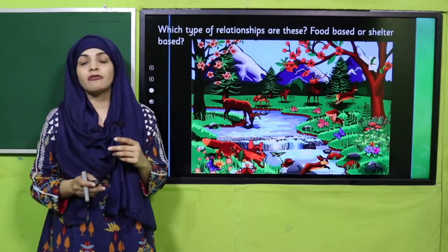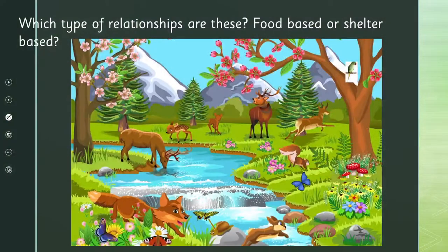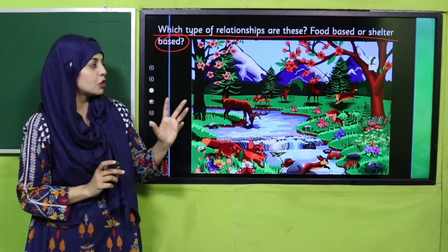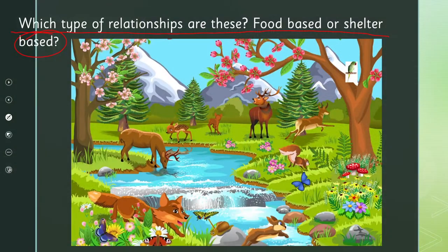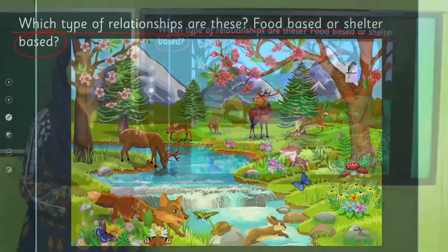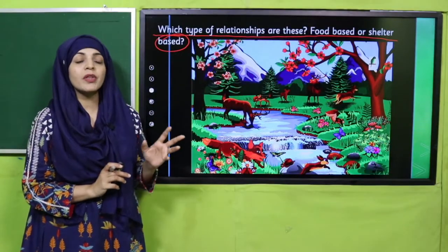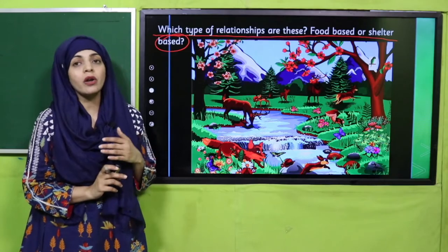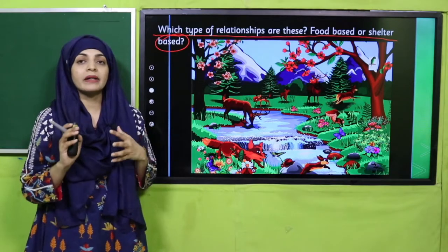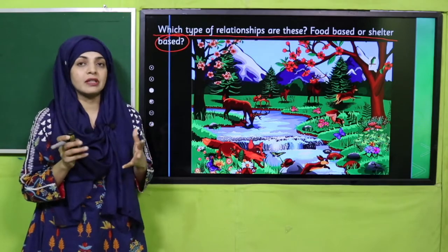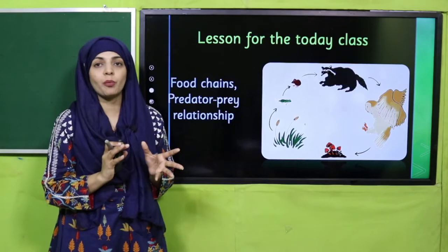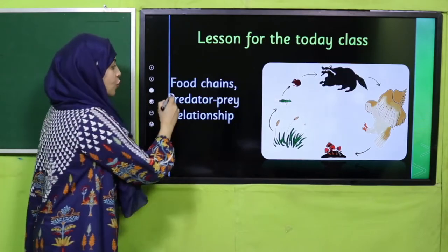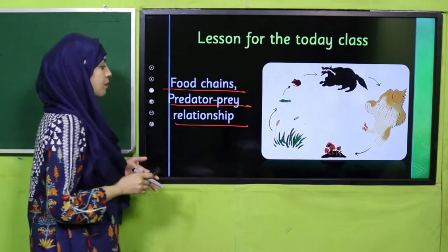Now here is a quick question — look at the picture and tell me which type of relationship these are: food-based or shelter-based? In an ecosystem there are both types of interactions, food-based and shelter-based, because if you find shelter then you can also find food. And so today's lesson is food chains and the predator and prey relationship.